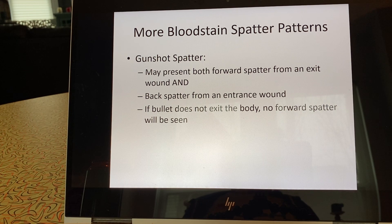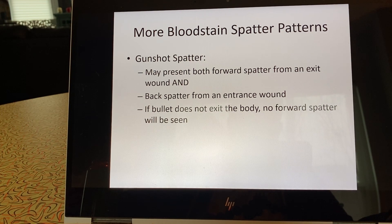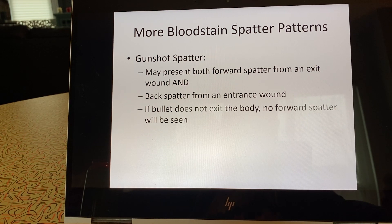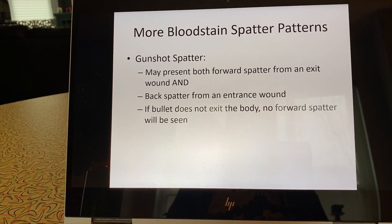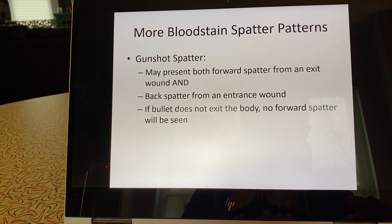If you don't see forward spatter from a gunshot wound at a scene, don't jump to some conspiracy theory that the body must have been moved or the crime scene cleaned up. Probably what's happened is the bullet simply did not exit the body — there's no exit wound. We saw that in the LA County coroner video: Ruben Hernandez had an entrance wound but no exit wound, so you wouldn't see any forward spatter from an exit wound that didn't exist.